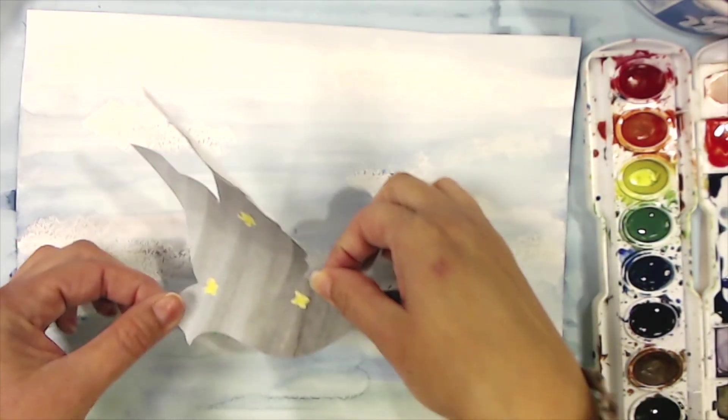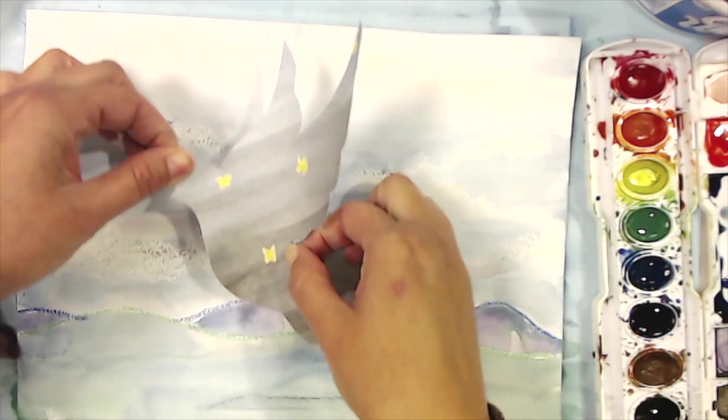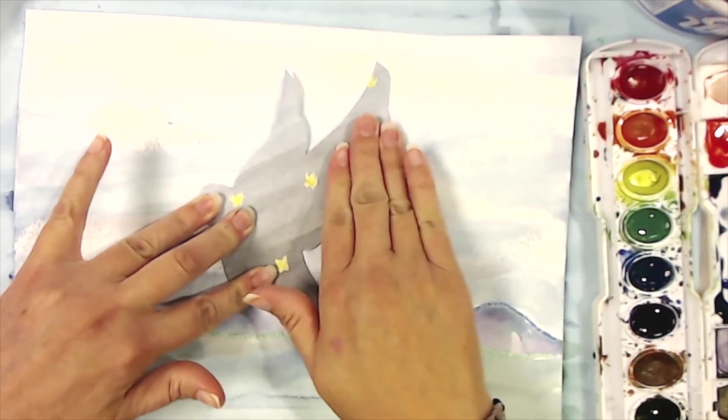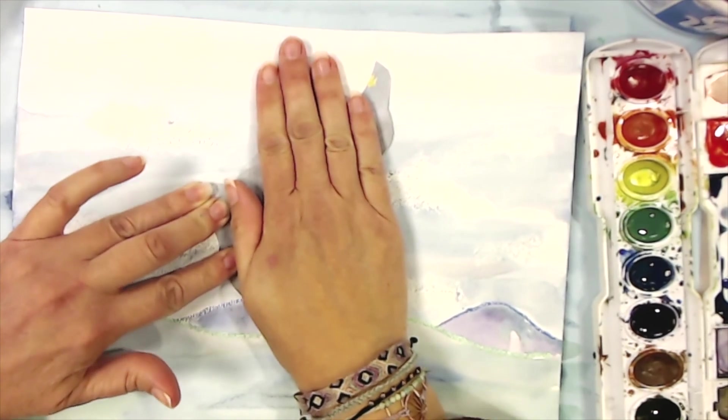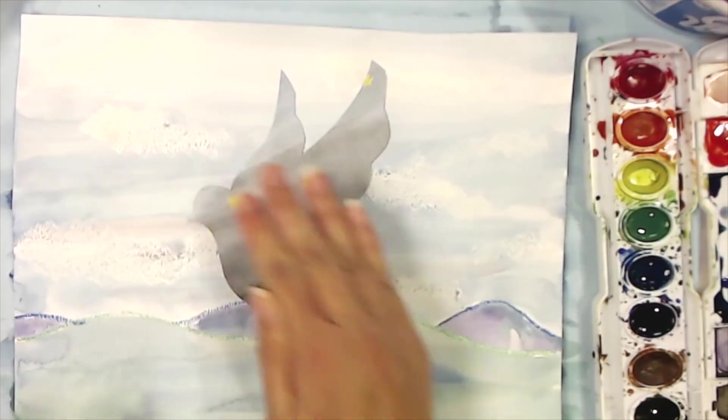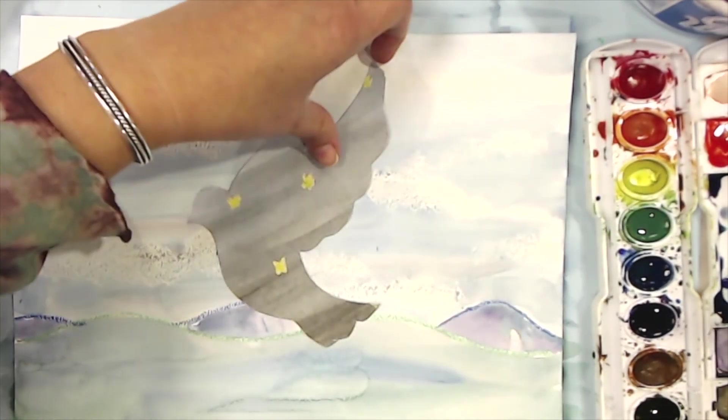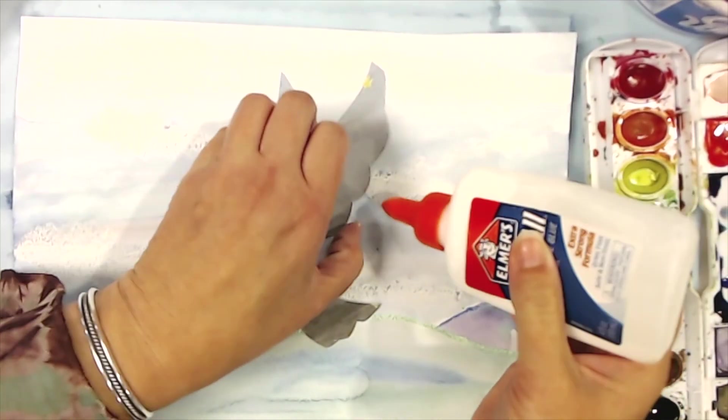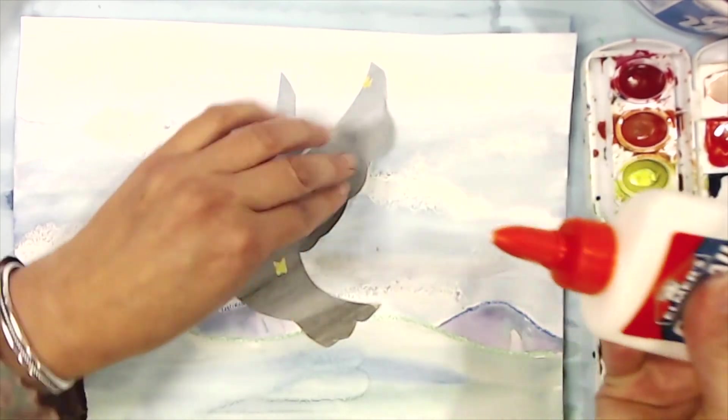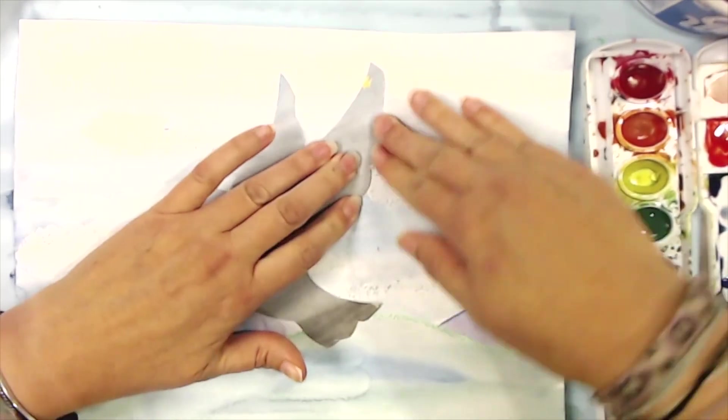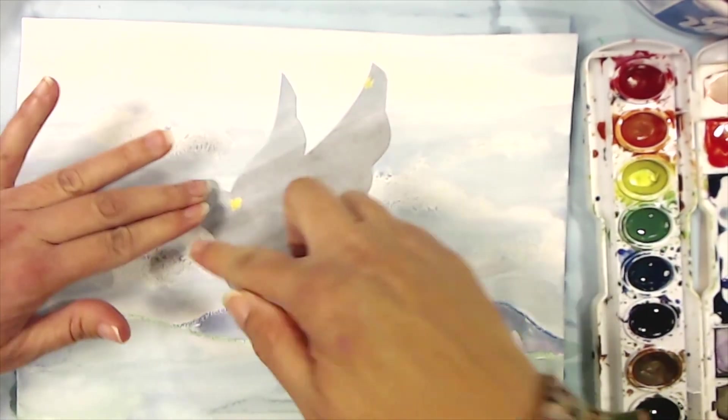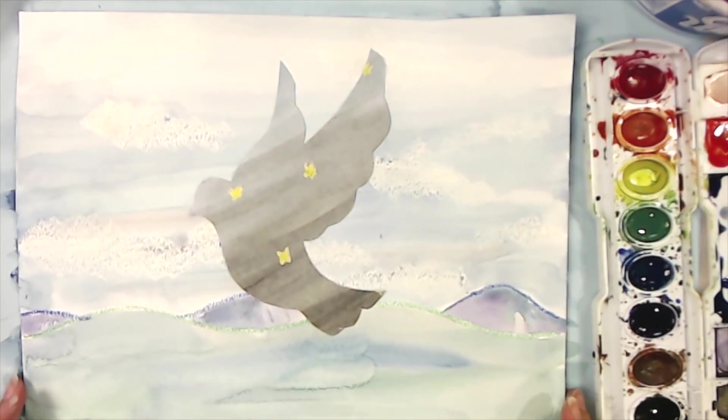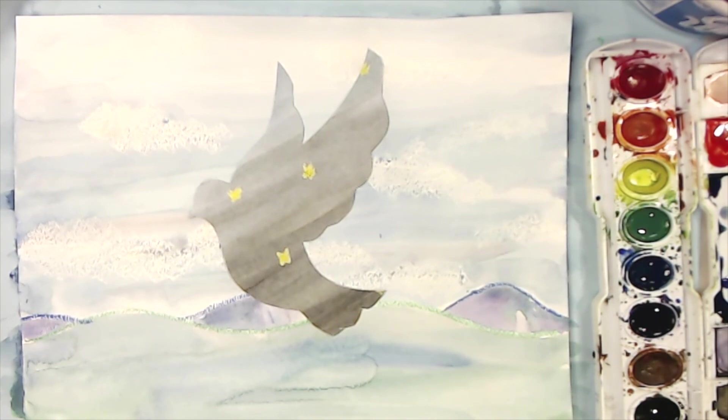And now I've got my dove. Do I want my dove flying this way more or more upright? I think I like him right here. So I'm going to press him on. If you missed some spots with the glue, you can always pull up a corner and put a little bit more glue, just like so. So press all your edges down so it lays as flat and neatly as possible. And there you have your Magritte inspired dove in a landscape.